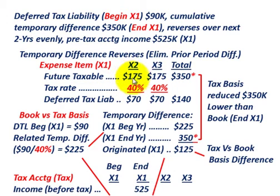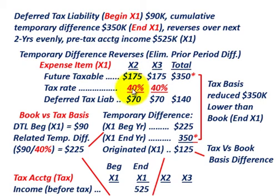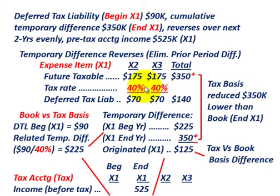For financial accounting or book accounting, we're going to be able to expense it over the next two years. We're going to have a future tax rate of 40% applied evenly over each of years x1 through x3. Taking 40% of our future taxable amount of $175,000 gives us a deferred tax liability of $70,000 per year for years x2 and x3. Our future taxable amount is $350,000, and the total deferred tax liability is $140,000.